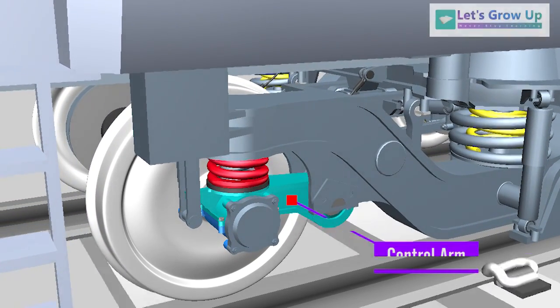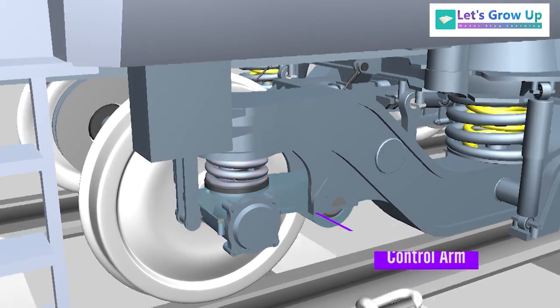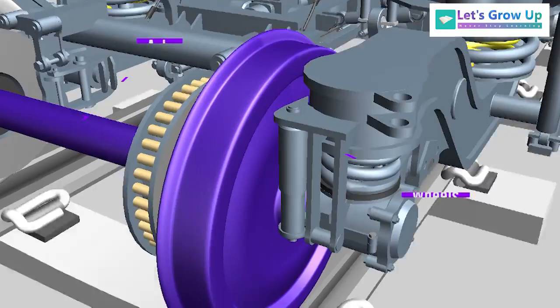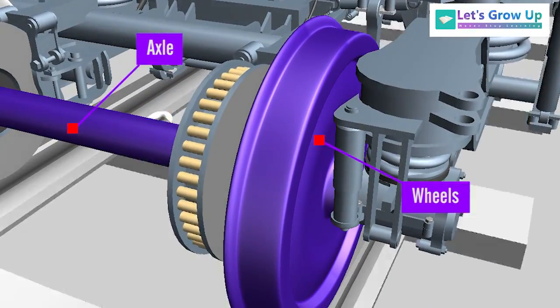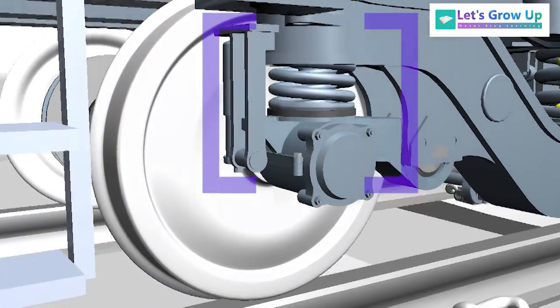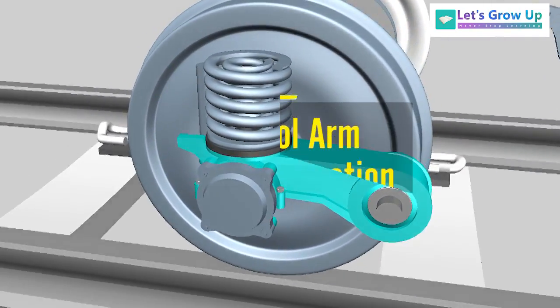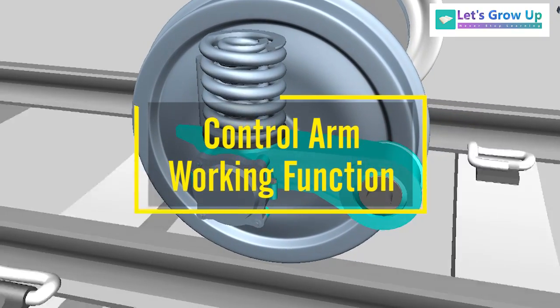The control arm is an articulated arrangement that is part of the primary suspension. Do you know how wheels and axles work with the bogey frame? Do you know how the primary suspension works? Don't worry, in this video we will learn about the control arm and its working function.